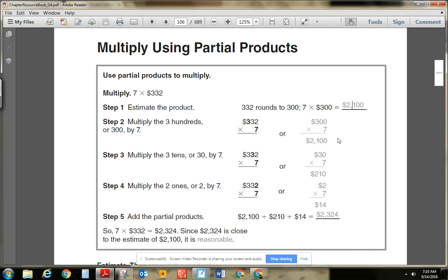Now, they broke it up here with a whole bunch of different steps. But we can notice, we notice that things are bold here. So we're going to do multiply 300 times 7, or 7 times 300. And you can see how they do that here. And that's 2100.